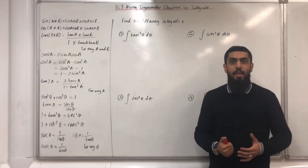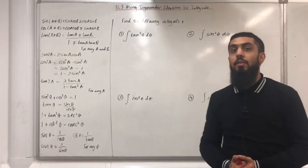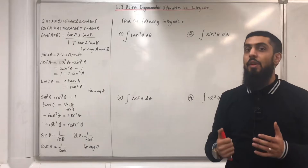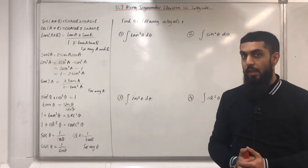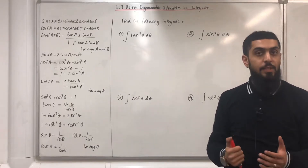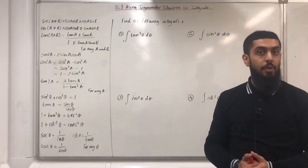Welcome back. In this video, I will be looking at 11.3 - using trigonometric identities to integrate. 11.3 represents chapter 11, section 3 of the Pearson A-level Maths Pure Maths Year 2 textbook.